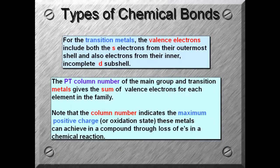For the transition metals though, the valence electrons will include the s electrons from their outermost shell and also electrons from their inner incomplete d shell. This is why the transition metals can have various oxidation numbers or various charges, because not only are they going to involve their s electrons, but they're also going to be able to use some of their d subshell electrons to form bonds.